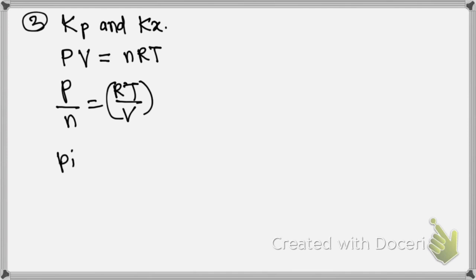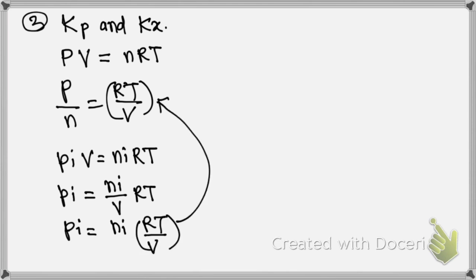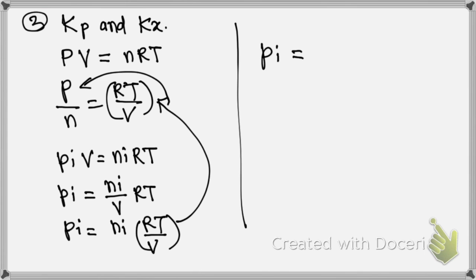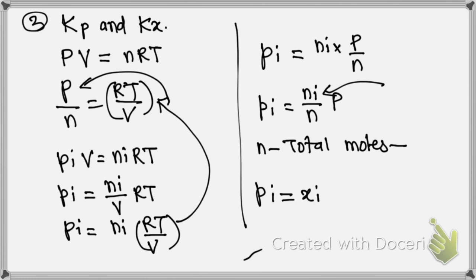For component i, PiV equals NiRT, or Pi equals Ni divided by V, into RT divided by V. Instead of RT divided by V, we can write P divided by N. So Pi equals Ni into P divided by N, or Pi equals Ni divided by N, into P. Here N is the total number of moles. Therefore Pi equals Xi into P, where Xi is the mole fraction equal to Ni divided by N.